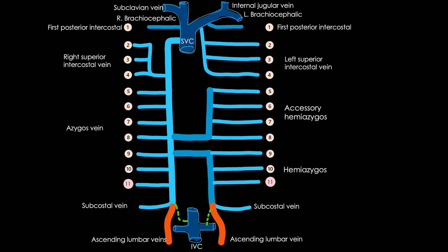So let's look at it again on the right side. The first intercostal space posterior intercostal vein opens directly into the right brachiocephalic vein. The second, third and fourth posterior intercostal veins on the right side join to make the right superior intercostal vein, and this one drains into my azygous. Then spaces 5 to 11 posterior intercostal veins open directly into the azygous vein.